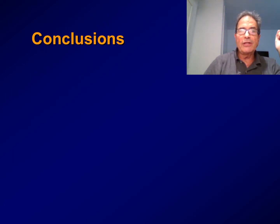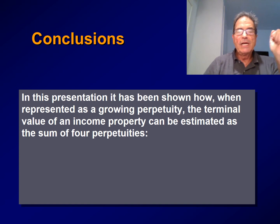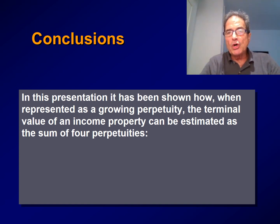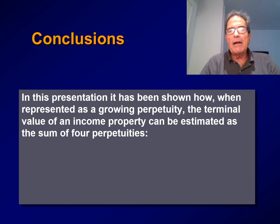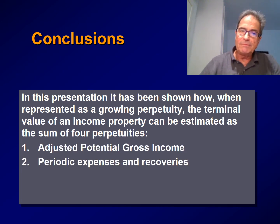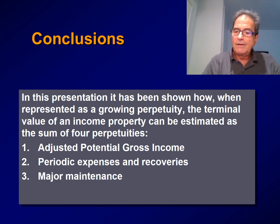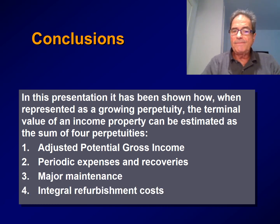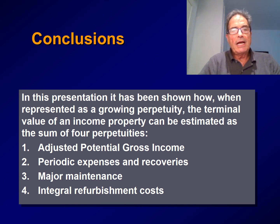In conclusion, this presentation has shown how, when represented as a growing perpetuity, the terminal value of an income property can be estimated as the sum of four perpetuities: adjusted gross potential income, periodic expenses and recoveries, major maintenance, and integral refurbishment costs. Thank you.